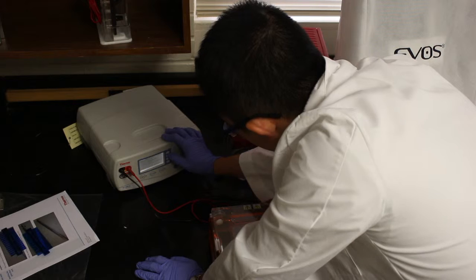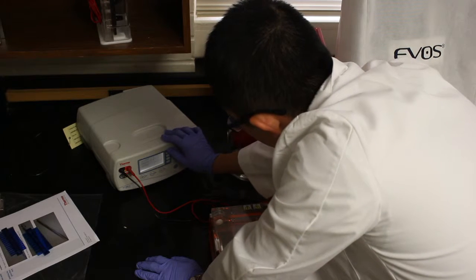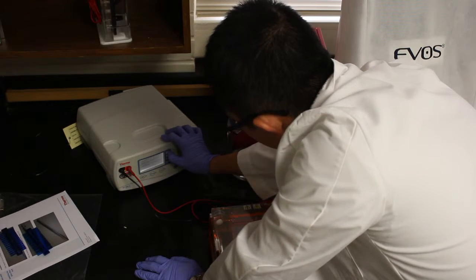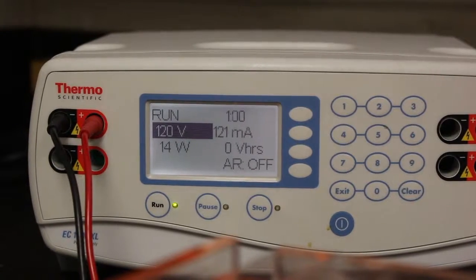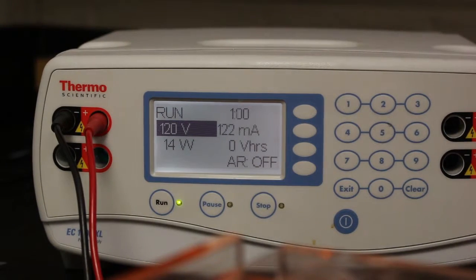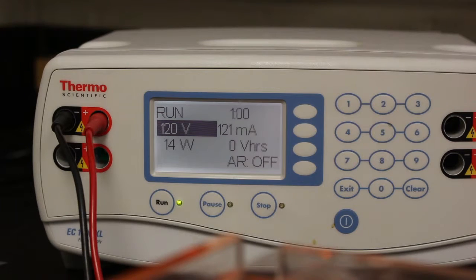Turn on the power source and allow the gel to run. This particular gel was run at 120 volts for one hour. Lower voltages will slow down the diffusion of samples. Longer periods of time will extend the distance covered by those same samples.